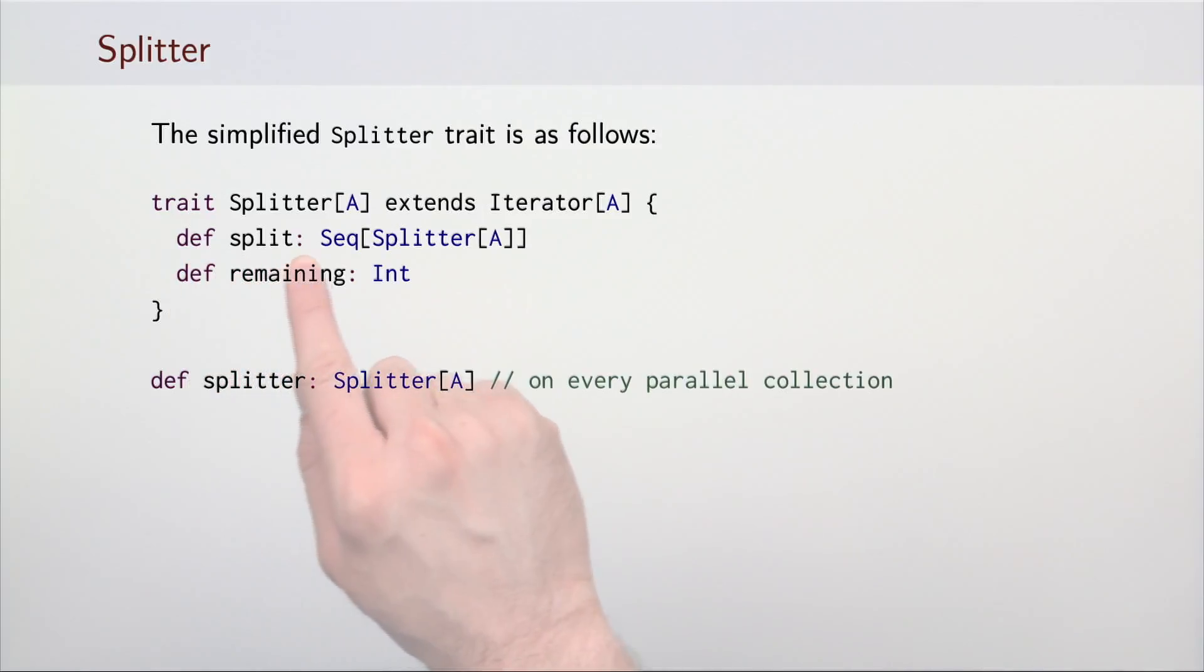It has the method split, which returns a sequence of splitters that traverse the subsets of the current splitter. It also comes with the remaining method, which returns an estimate on the number of remaining elements. Every parallel collection has its own splitter implementation and must define a method splitter, which returns its own splitter object.